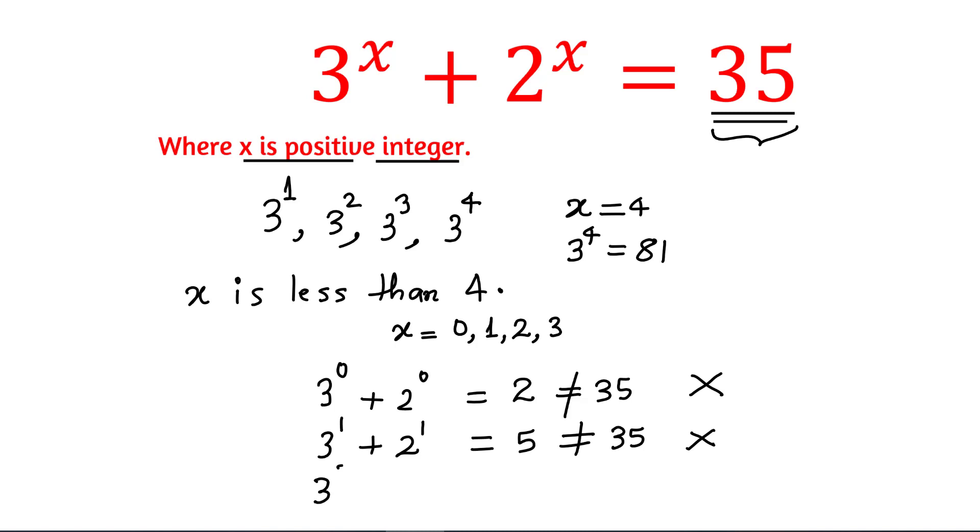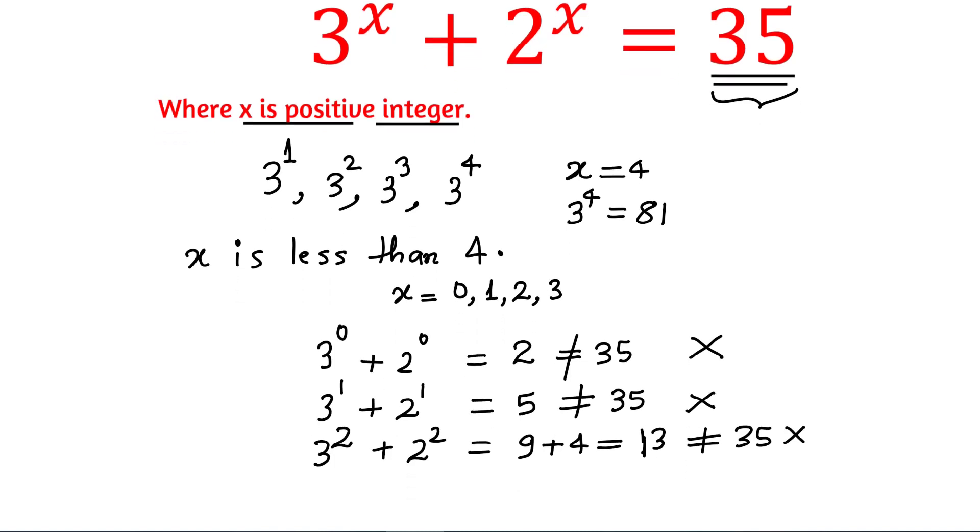X is equal to 2, so 3 raised to the power 2 plus 2 raised to the power 2, that is 9 plus 4, which is equal to 13, which is also not equal to 35. This means this is also not a solution.